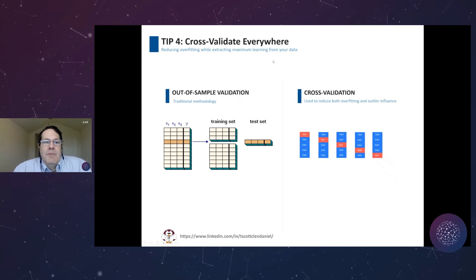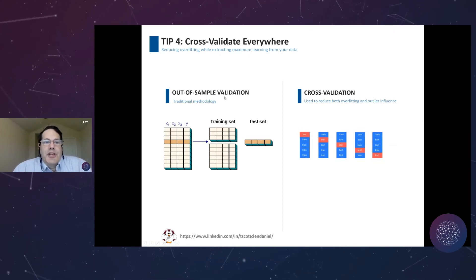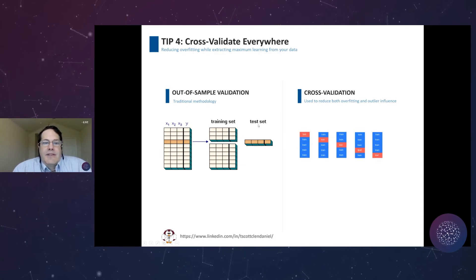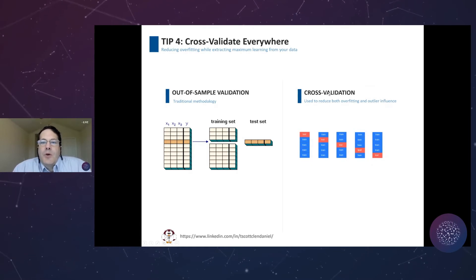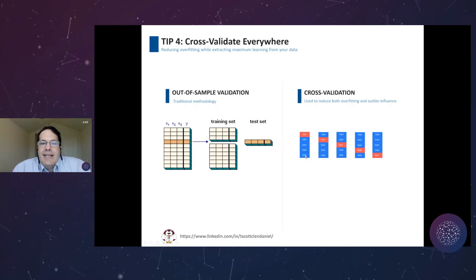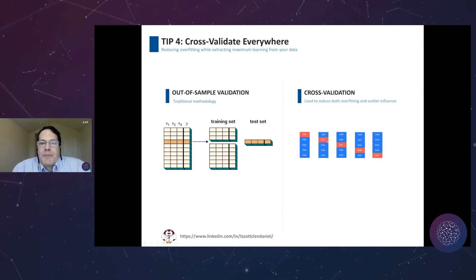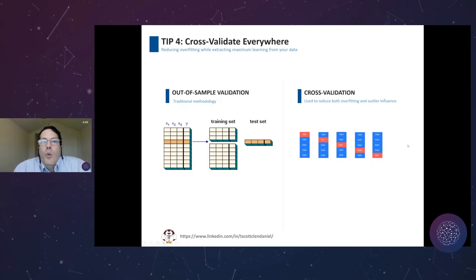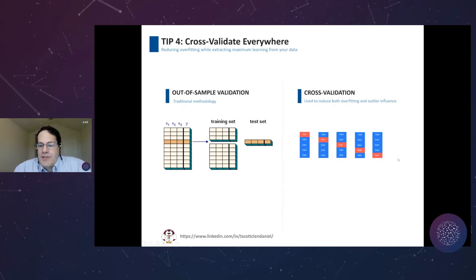Tip number four: cross-validation. The traditional methodology takes some records as a training set and some as a test set, holding the test group out to prevent overfitting. In cross-validation, you take five different instances — 80% in training, test against the remaining group — then switch which group is training and which is testing in each fold. This ensures you don't have overfitting or leakage.